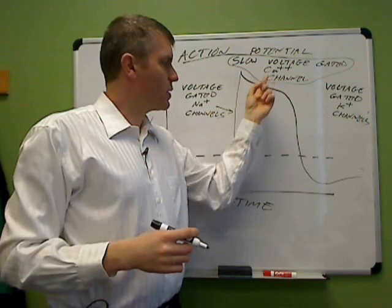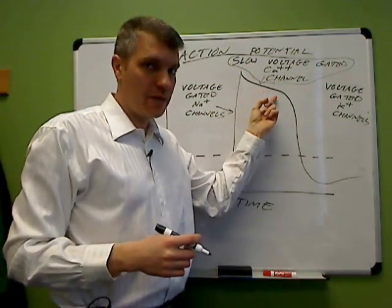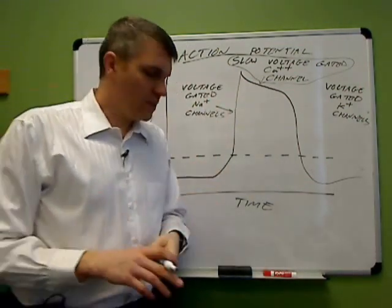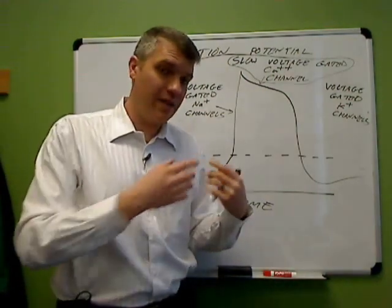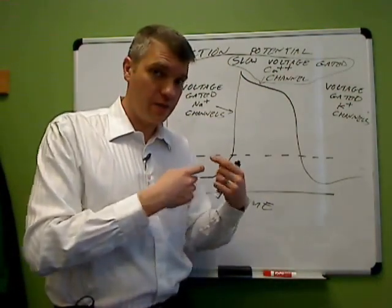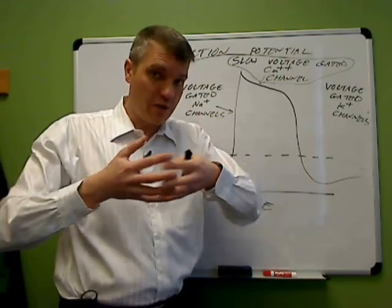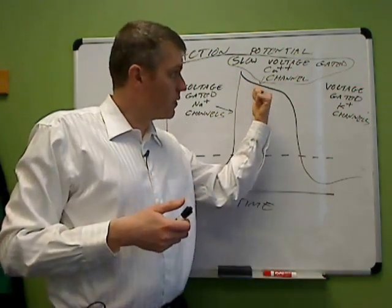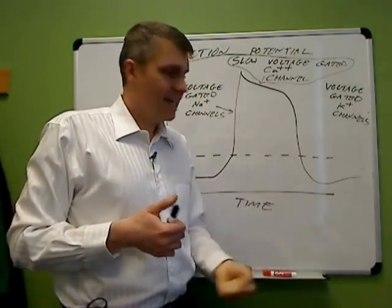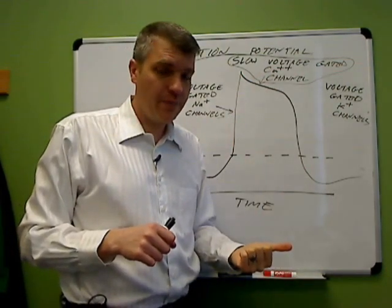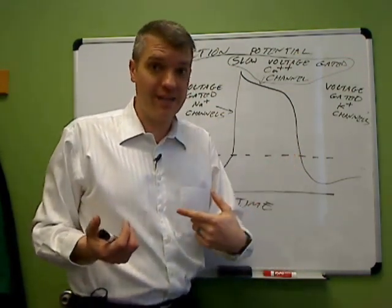The calcium entering the cell during the plateau phase causes the cell to remain positive for an extended period of time. If you recall the sliding filament theory, an increase in the concentration of calcium inside skeletal muscle cells causes the filaments to slide over each other, causing the cell to contract. So we have another source for calcium to enter the cell here. In skeletal muscle cells, it was coming from the sarcoplasmic reticulum, but in heart muscle cells, it's coming from the sarcoplasmic reticulum and also from outside of the cell.